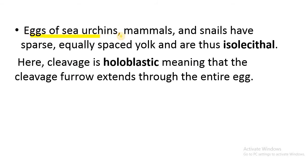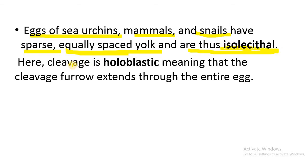In the case of eggs of sea urchins, mammals, and snails, they have sparse and equally spaced yolk — very little quantity of yolk that is evenly distributed. These eggs are called isolecithal. In this stage, the cleavage followed is holoblastic, meaning the cleavage furrow extends through the entire egg.